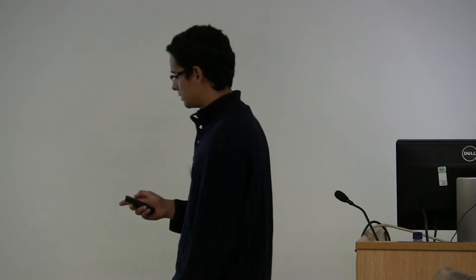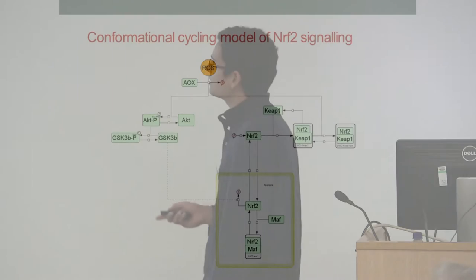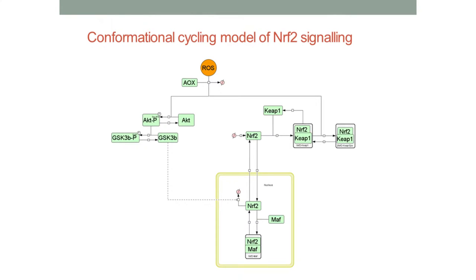Which has now largely been discarded. And this is the existing model adopted by the field, where NRF2 transcription factor is synthesized constitutively and will bind its inhibitor to form the complex, so same as the other one. The only difference now is that upon oxidation of the complex by reactive oxygen species, the complex changes conformation and then KEAP1 stops being recycled. And so NRF2 just accumulates and goes to the nucleus.